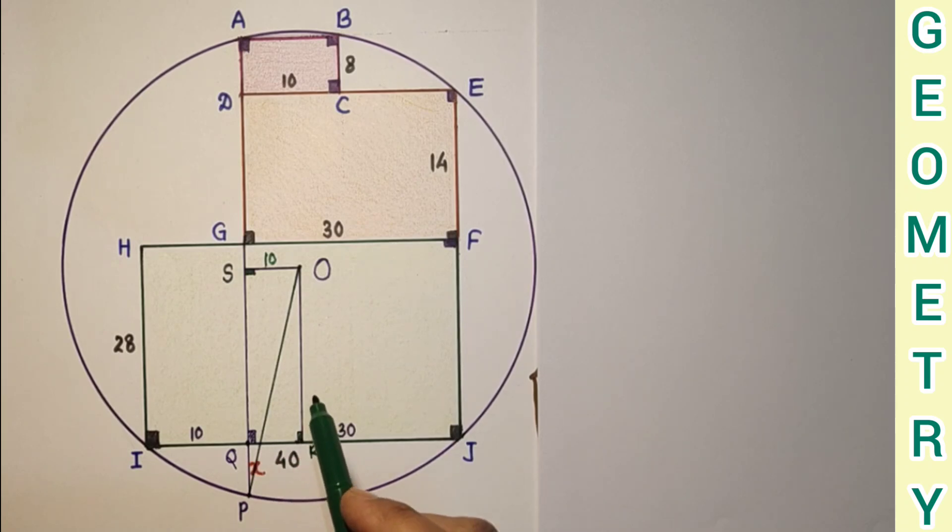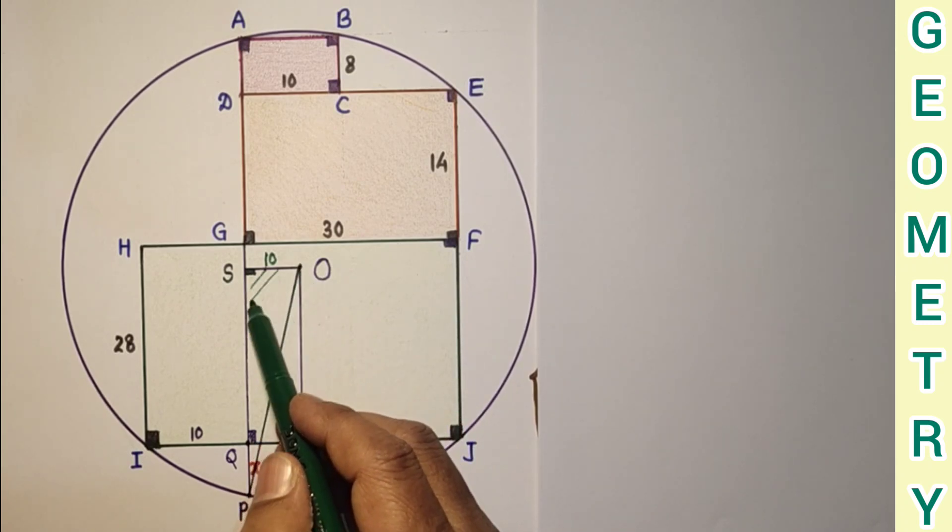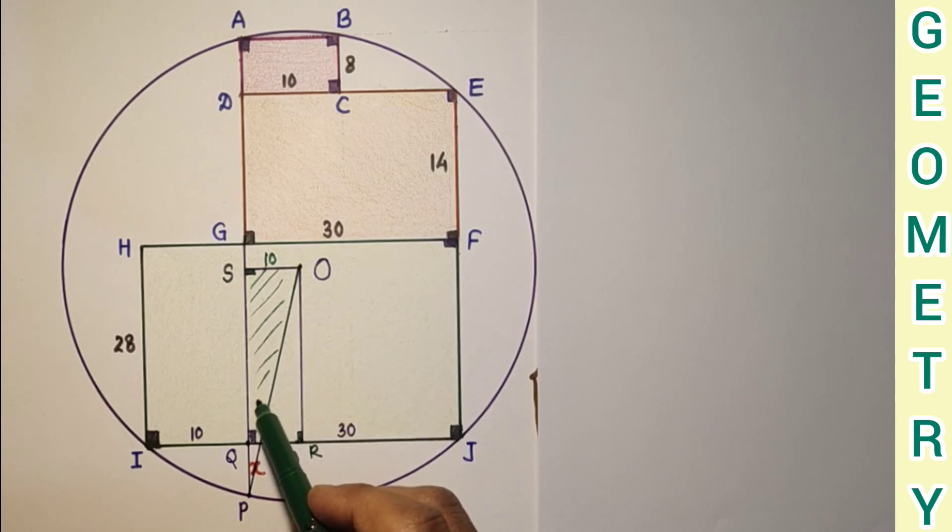Now we can use Pythagoras theorem. From center to the circumference this is radius. We are using this right angle triangle and we are using Pythagoras theorem here.